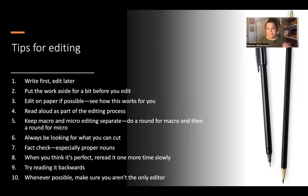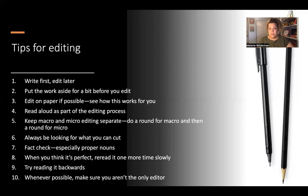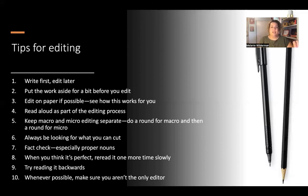Number five — this tip is wildly important: keep macro and micro editing separate. Do a round that is for macro big picture issues, then do another round for micro small picture issues. Edit the first time for big picture: does it make sense, is everything in the right order, did I get the attributions right? Then take a second round to look for those small punctuation, grammar, and spelling mistakes. Those are two different types of editing with your brain working in two different ways.